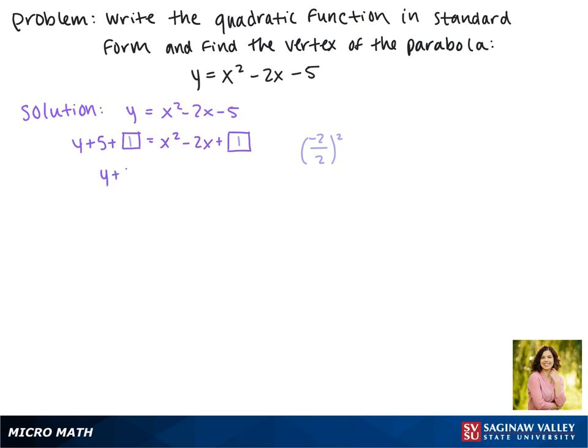So now we have y plus 6, and making this into a binomial squared, it's x minus 1 squared.